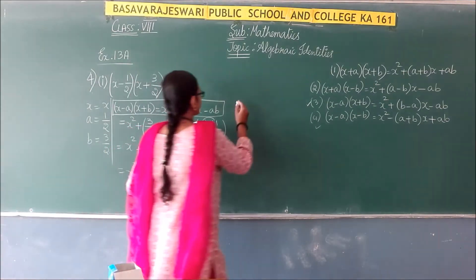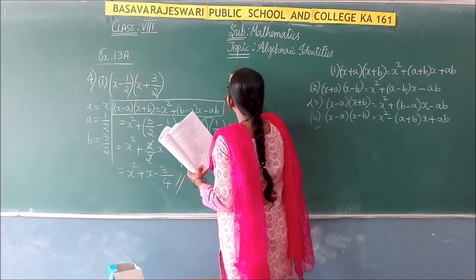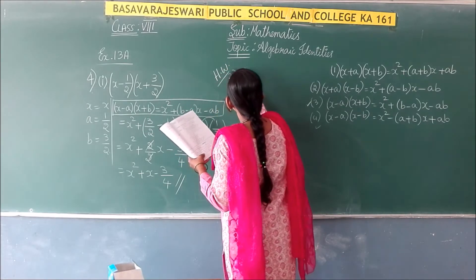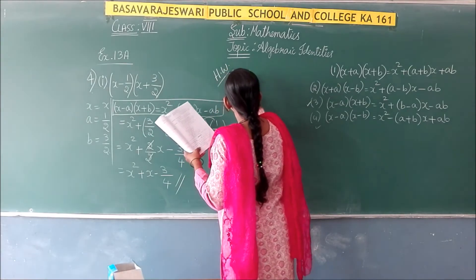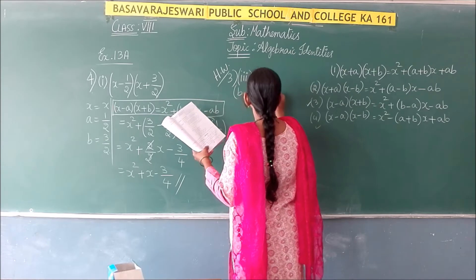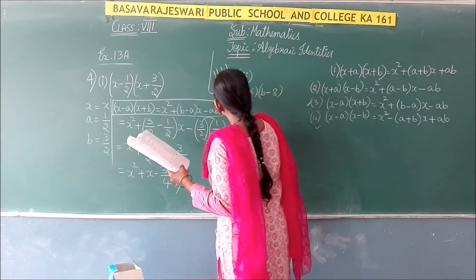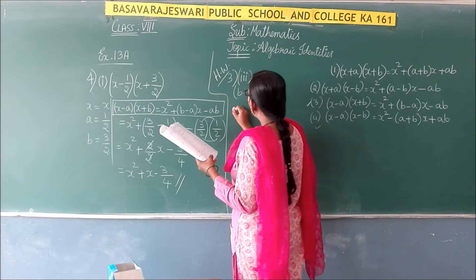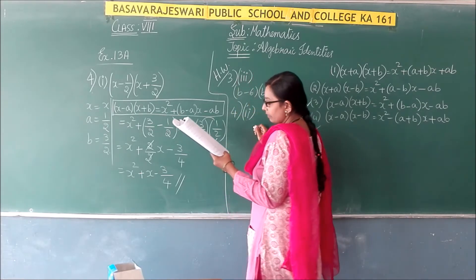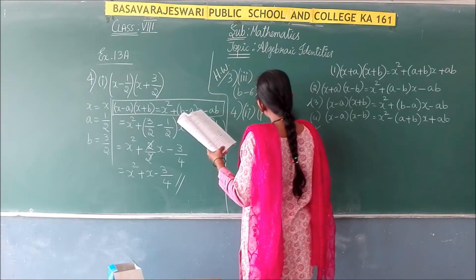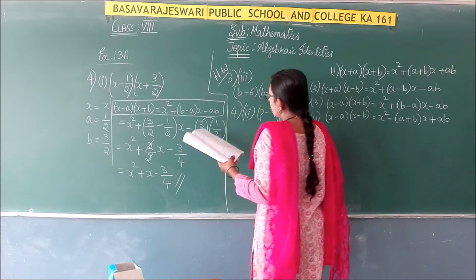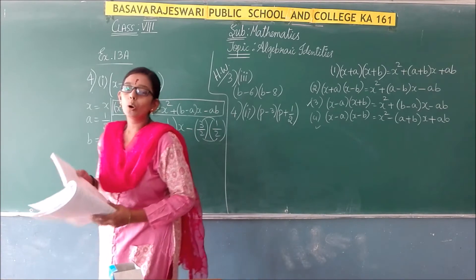In the third way, the homework problem is (b - 6)(b - 8). In the fourth way, the homework problem is (t - 3)(b + 1/2). Please take these two problems as homework.